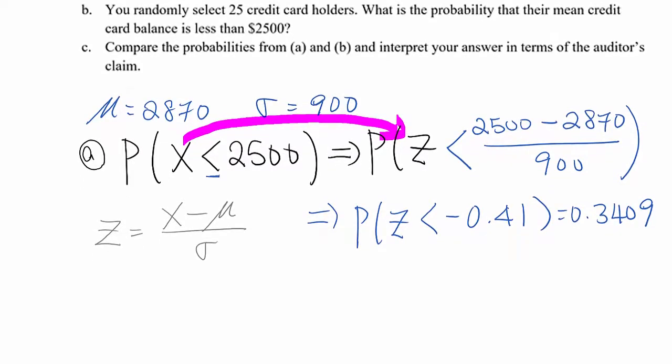It shows that you randomly select 25 credit card holders. Which means you are selecting some sample size here. So, it becomes sampling distribution. So, B case, N size given which is 25. So now we can say that represents sampling distribution.